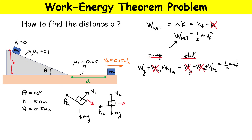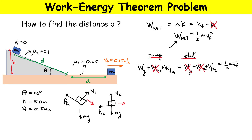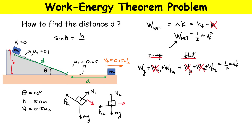We need to calculate how far the block slides down the ramp. Using trigonometry: sine of theta equals the height divided by the hypotenuse D1. So the ramp distance D1 equals the height divided by sine of theta — that is, D1 = h / sin θ.